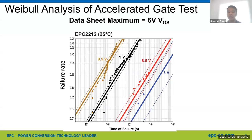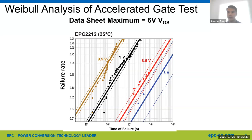We conducted accelerated gate reliability testing, where we took our devices well beyond the datasheet limit and monitored how they fail. Here is the Weibull distribution plot of the test results, where the vertical axis is the failure rate and the horizontal axis shows the time of failure in seconds. We took four groups of parts — 32 devices each group — and tested them at 8 volt, 8.5 volt, 9 volt, and 9.5 volt respectively. The devices fail very quickly at 9.5 volt, but it took hundreds of hours to generate just two failures at 8 volt.